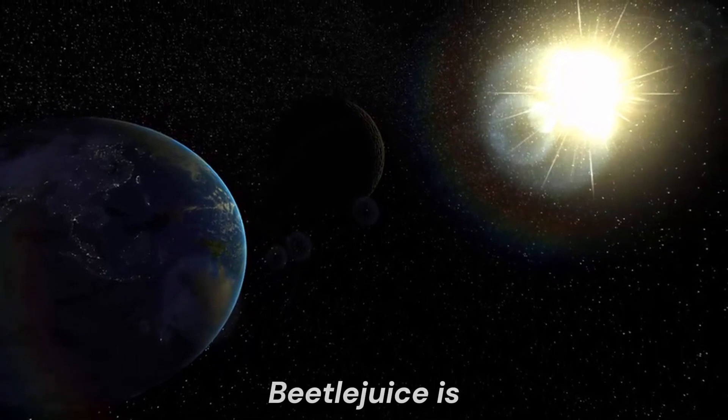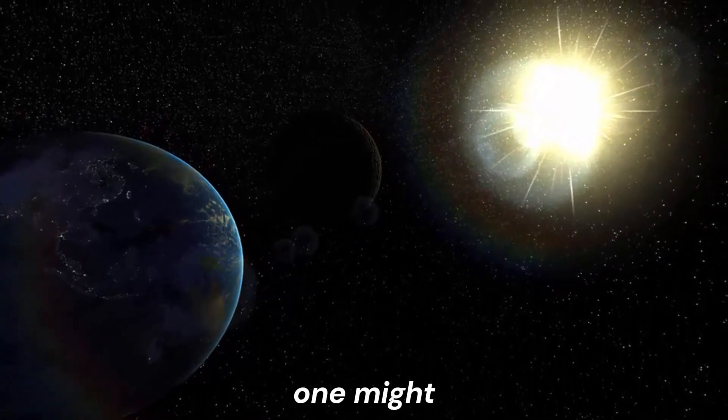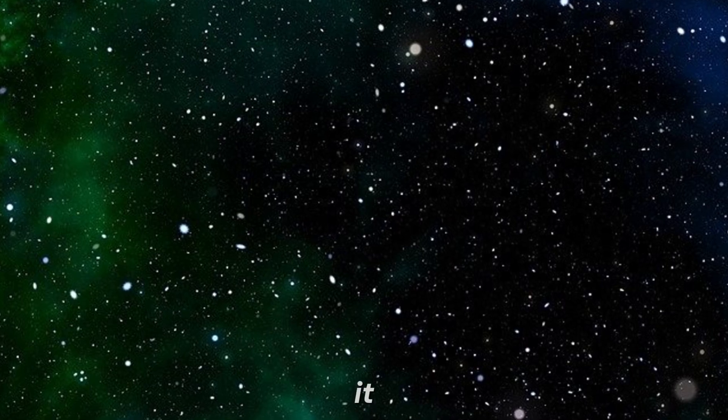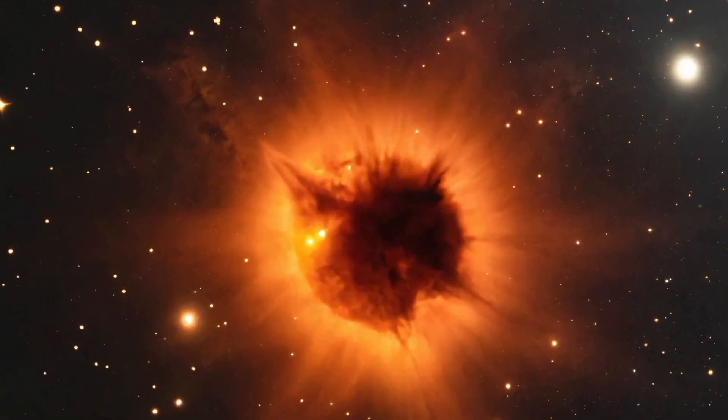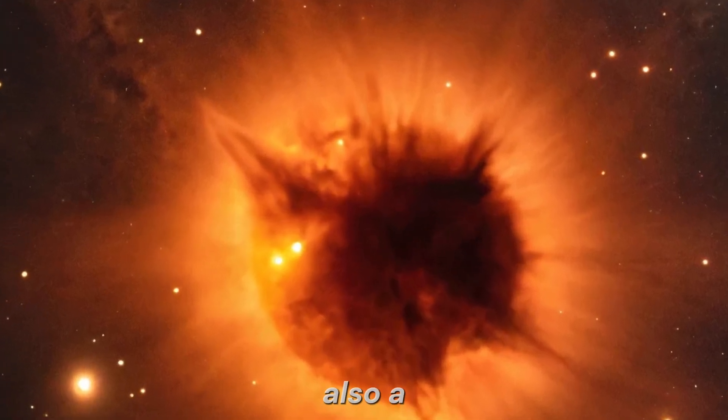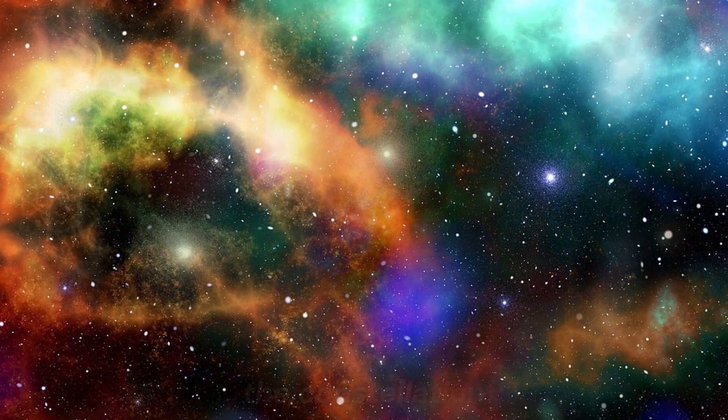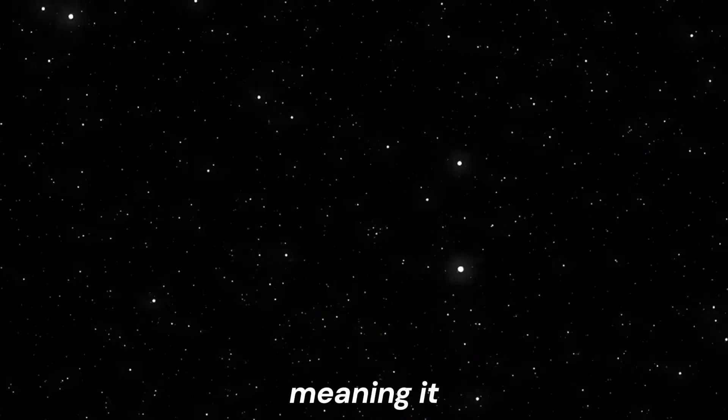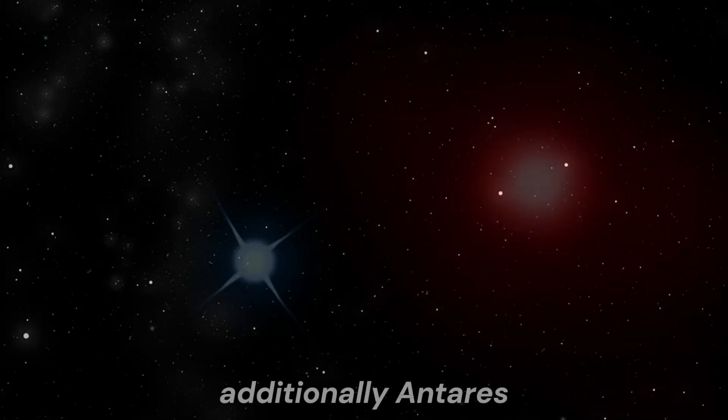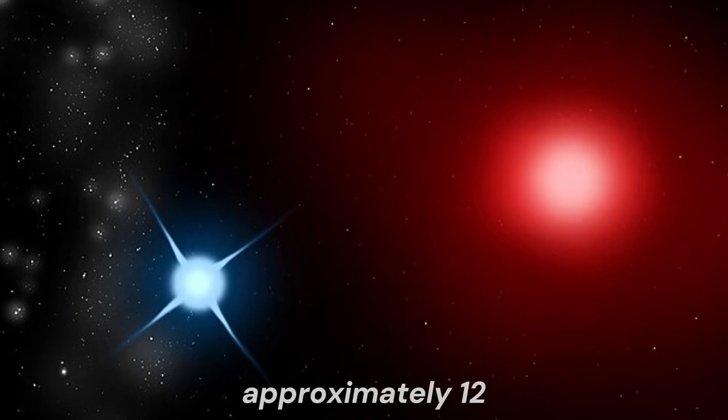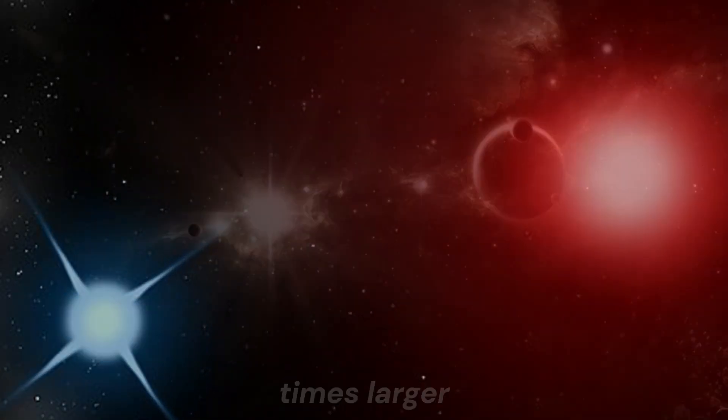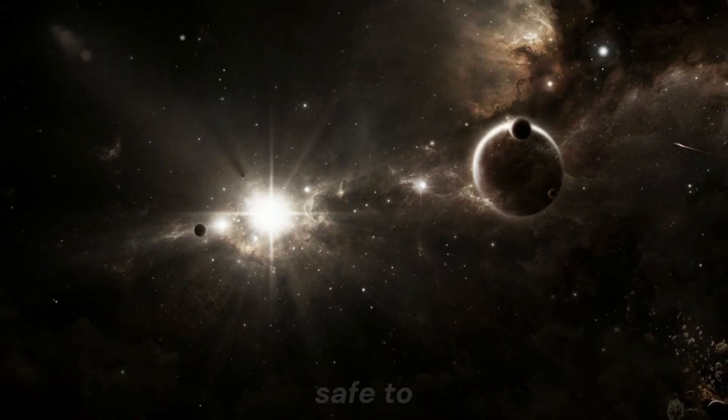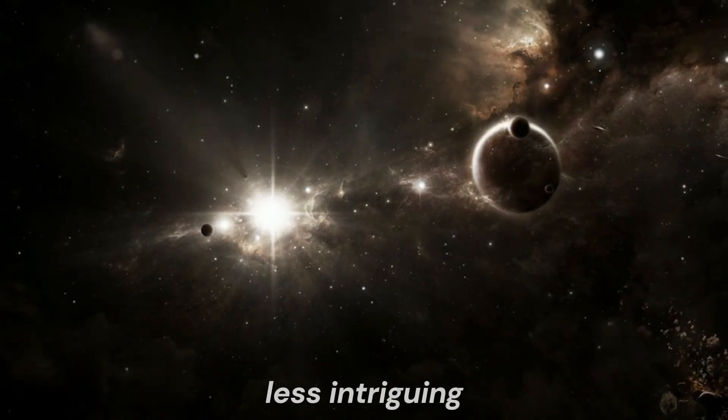Interestingly, Betelgeuse is not as unique as one might think. Although there aren't many stars like it, some share certain similarities and are equally fascinating. One of its cosmic cousins is Antares, also a red supergiant located in the constellation Scorpius. Antares is also a variable star, meaning it changes in brightness over time, just like Betelgeuse. Additionally, Antares has a mass approximately 12 times that of the sun and a radius 700 times larger than the sun, so it's safe to say that Antares is no less intriguing than Betelgeuse.